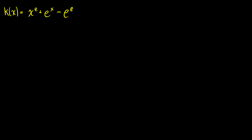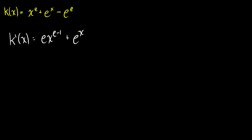For the last question, k of x is equal to x to the e plus e to the x minus e to the e. Taking the derivative: for x to the e, since e is just a number, we use the power rule to get e times x to the e minus 1. The derivative of e to the x is always e to the x. And e to the e is just a constant, so its derivative is 0. So the final result is e times x to the e minus 1 plus e to the x.